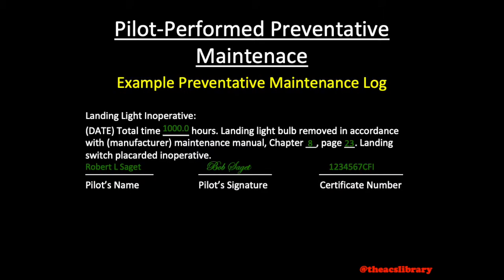An example of a pilot performed maintenance log entry to be entered into the aircraft's maintenance records is shown here. This example can be found in FAA Advisory Circular 91-67, 'Minimum Equipment Requirements for General Aviation Operations under Part 91.'